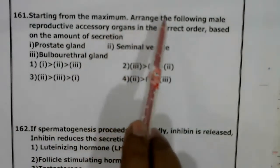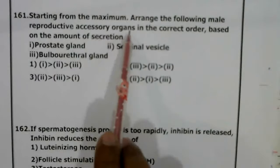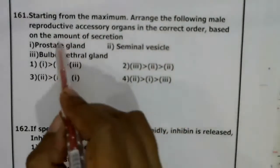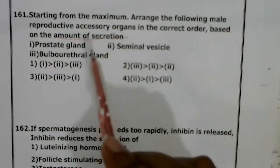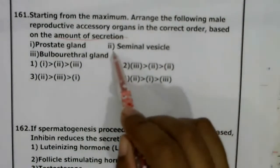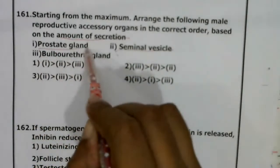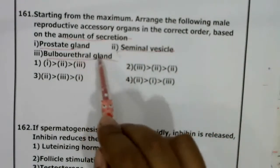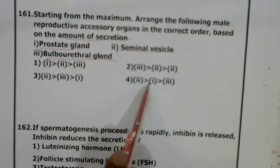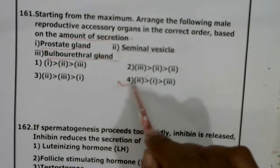Question 160: Arrange male reproductive accessory organs in correct order based on amount of secretion, starting from maximum. The highest percentage — 60% — is contributed by the seminal vesicle; next is the prostate; then the bulbourethral gland. Correct answer will be 2, 1, 3, which corresponds to option 4.